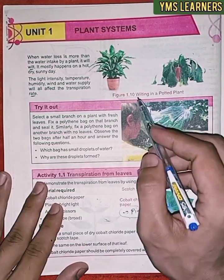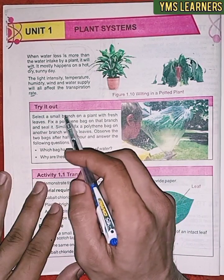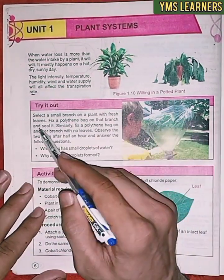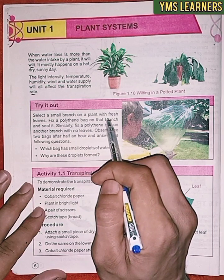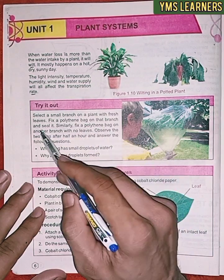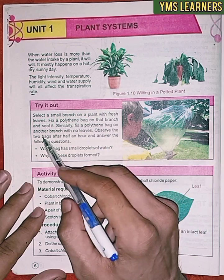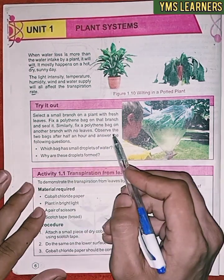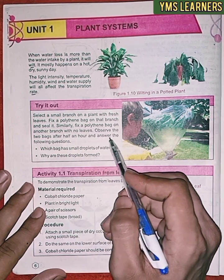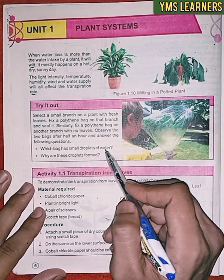To show wilting in a potted plant, select a small branch on a plant with fresh leaves. Fix a polythene bag on that branch and seal it. Similarly, fix a polythene bag on another branch with no leaves. Observe the two bags after half an hour and answer: which bag has small droplets of water?